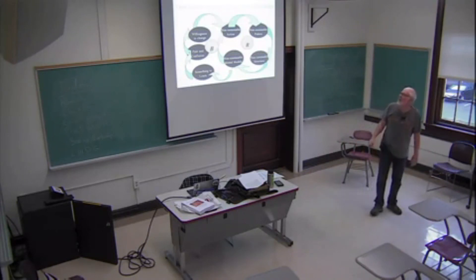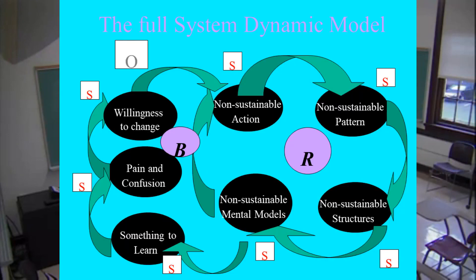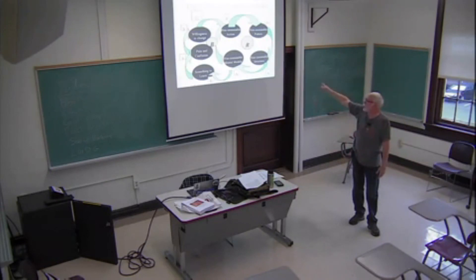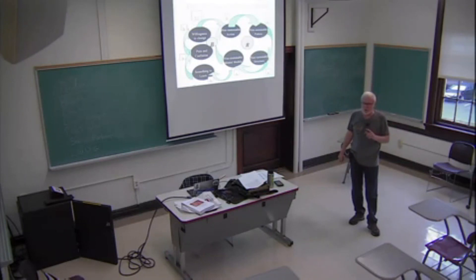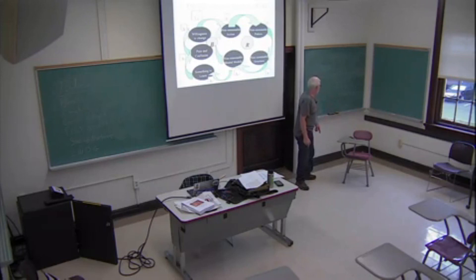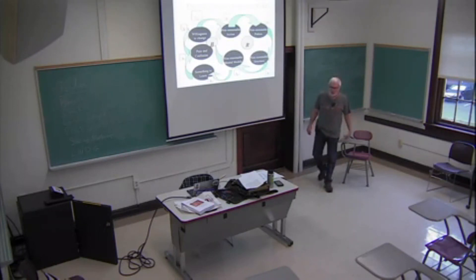Here is the full systems model: non-sustainable patterns of behavior being balanced by pain, suffering, and a willingness to change. The O, the S, the B, and the R with arrows are the grammar of drawing systems models. The homework on Blackboard is to practice loopy thinking, read the Spirals of Change reading, prepare for the discussion post before Thursday, and create your own causal loop diagram from an industrial poultry video to share with others on Thursday.